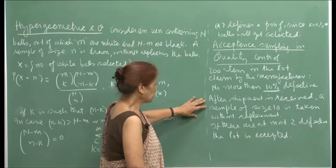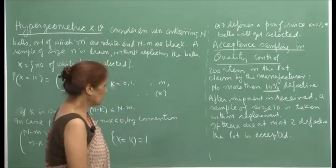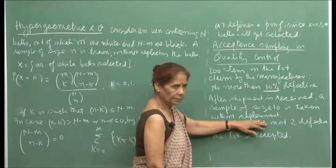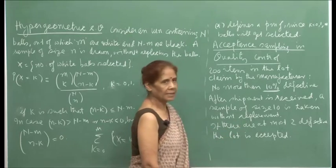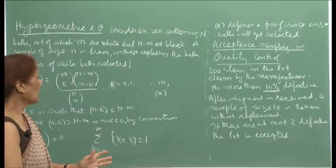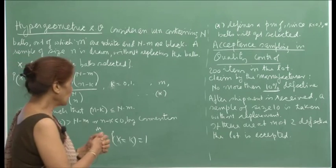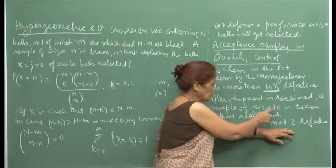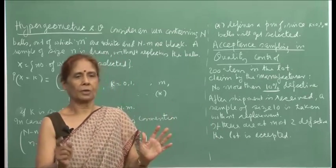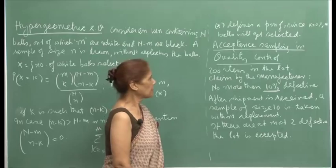After the shipment is received, a sample of size 10 is taken without replacement. If there are at most 2 defective in the sample, the lot is accepted. You randomly choose a sample of size 10 from the whole lot of 200 items, inspect those 10 items, and if you find 0, 1, or 2 defective, you accept the whole lot. If there are more than 2 defective, you reject the lot. This is what you call acceptance sampling in quality control.